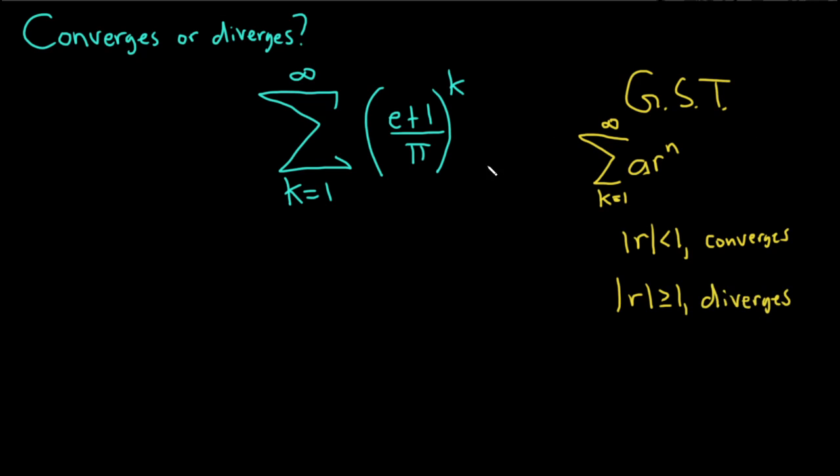So in this case you see you have r to a power. So r is whatever is being raised to a power. So here r is e plus 1 divided by pi. And we just have to check if it's less than 1 or greater than or equal to 1 in absolute value. So it's positive, so we don't really need the absolute value.